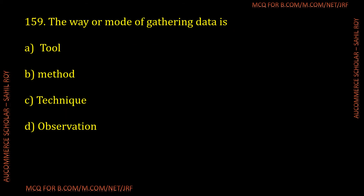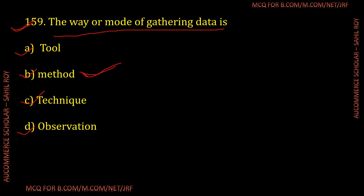Question number 159: The way or mode of gathering data is called what? The correct answer is method — the way and mode of gathering data is called method. Option B is the correct answer for the given question.